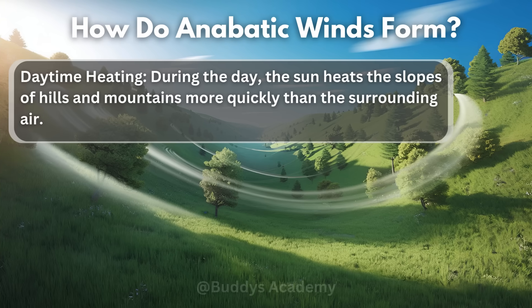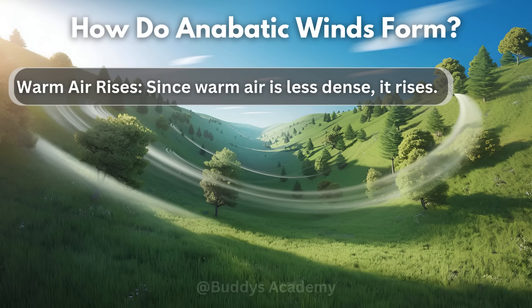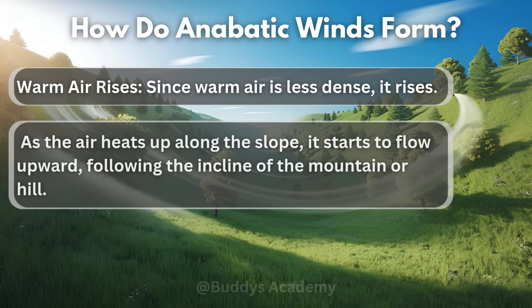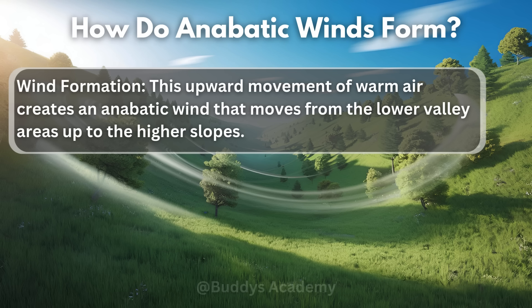So how do anabatic winds form? The first reason is daytime heating. During the day, the sun heats the slopes of hills and mountains more quickly than the surrounding air. The ground warms up and the air directly above it becomes warmer as well. The second reason is that warm air rises — since warm air is less dense, it rises, and as the air heats up along the slope it starts to flow upward following the incline of the mountain or hill. Remember: warm air rises and cold air sinks. The third reason is wind formation — this upward movement of warm air creates an anabatic wind that moves from the lower valley areas up to the higher slopes.